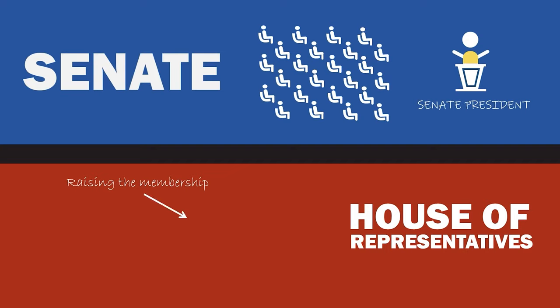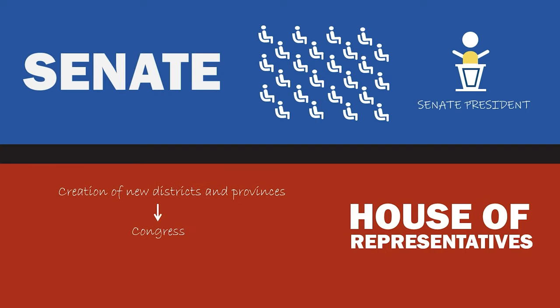Raising the membership of the House may be done through reapportionment. This process results in the creation of new districts and provinces. This must be done by Congress within three years after the return of the census, in order to ensure that proportional representation is preserved.